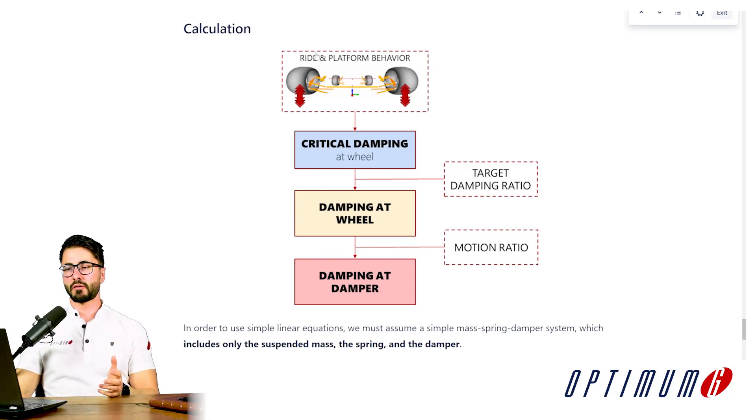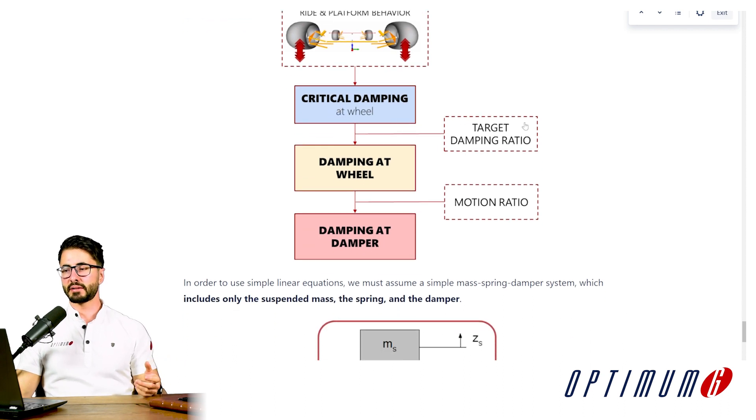So first we define ride and platform behavior. We've discussed that. The next step is to calculate the critical damping at the wheel. Then we need to define a target damping ratio. If we know the critical damping and the ratio of this critical damping we would like to have, we can calculate the damping directly at the wheel.